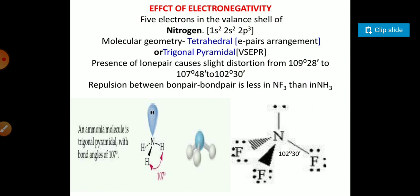The effect of electronegativity: if we can see that five electrons in the valence shell are present like in nitrogen, the molecular geometry will be tetrahedral according to electron pair arrangement or trigonal pyramidal according to VSEPR theory. The presence of the lone pair causes slight distortion from 109 degrees 28 minutes to 107 degrees 48 minutes to 102 degrees 30 minutes. The repulsion between bond pair-bond pair is less in NF3 than NH3. So this is the structure of NF3 and NH3.